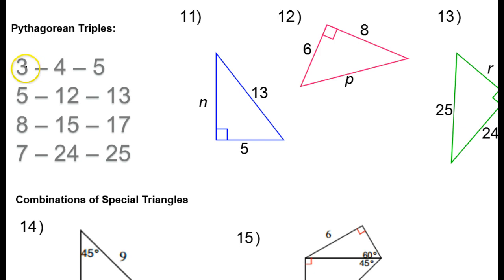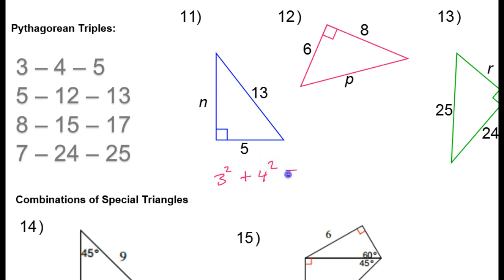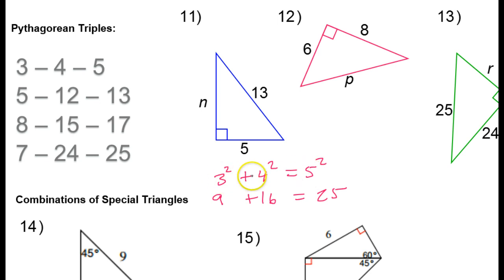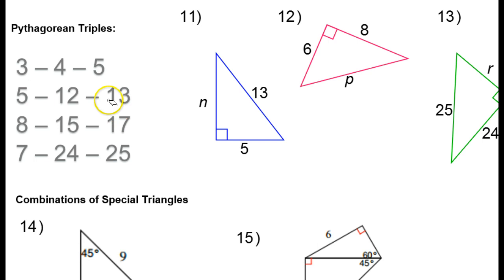Pythagorean triples are sets of numbers that represent the sides of a right triangle. They satisfy the Pythagorean theorem, which says leg squared plus leg squared equals hypotenuse squared. For example, the triple 3, 4, 5: 3 squared plus 4 squared equals 5 squared. That makes 9 plus 16, which does equal 25. These are the most common ones because of the way they make whole numbers. They show up over and over again on standardized tests, so it's worth memorizing them.